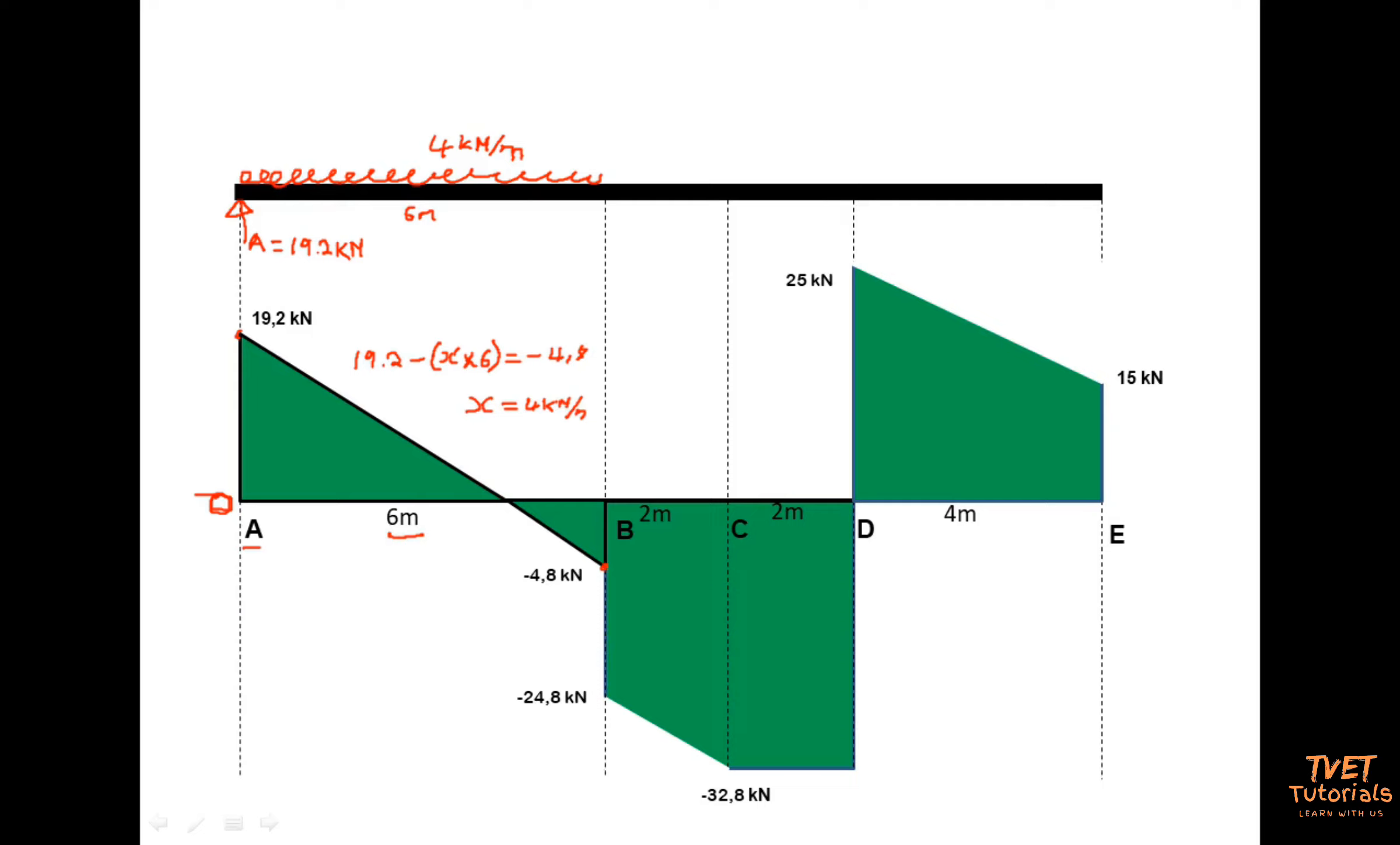So we move on. Now I'm at point B. So at B we move from negative 4.8 to negative 24. The only reason why we have a vertical line going down in a shear force diagram is because of a point load. So we go ahead and draw a point load at point B. So now at B I have a point load and now we need the magnitude of the point load.